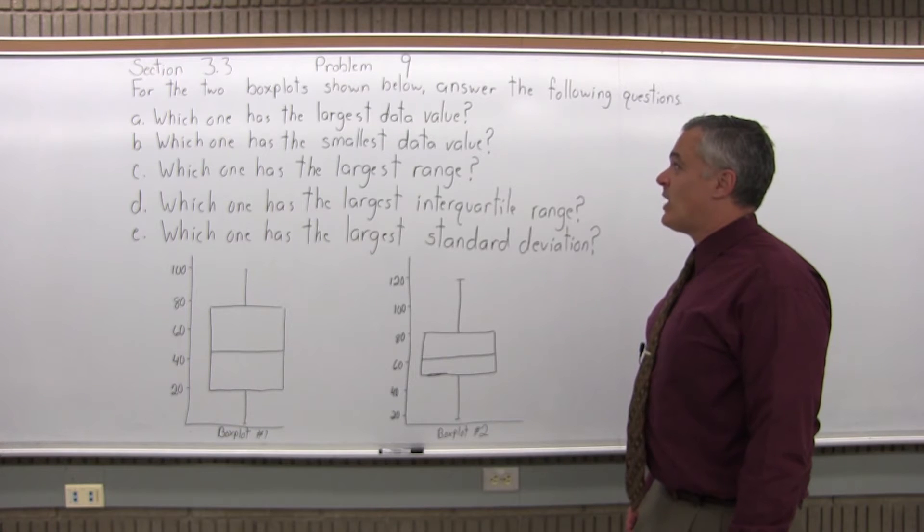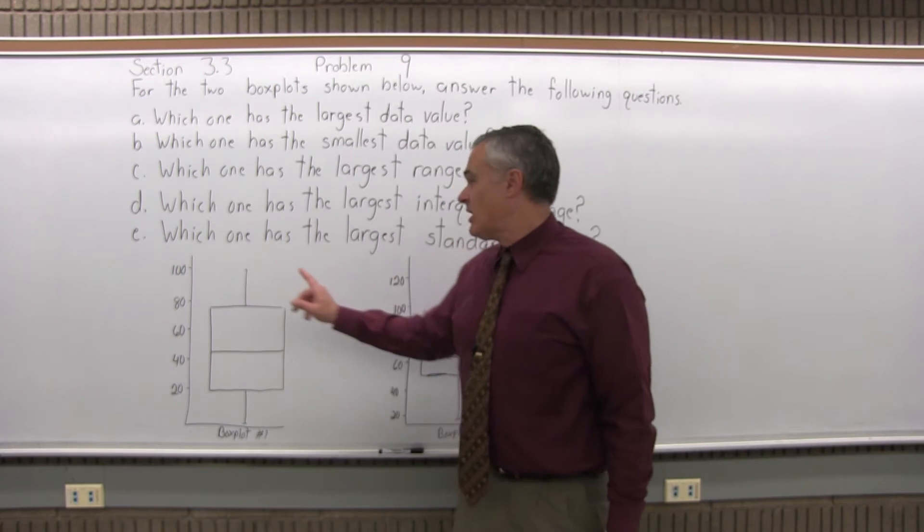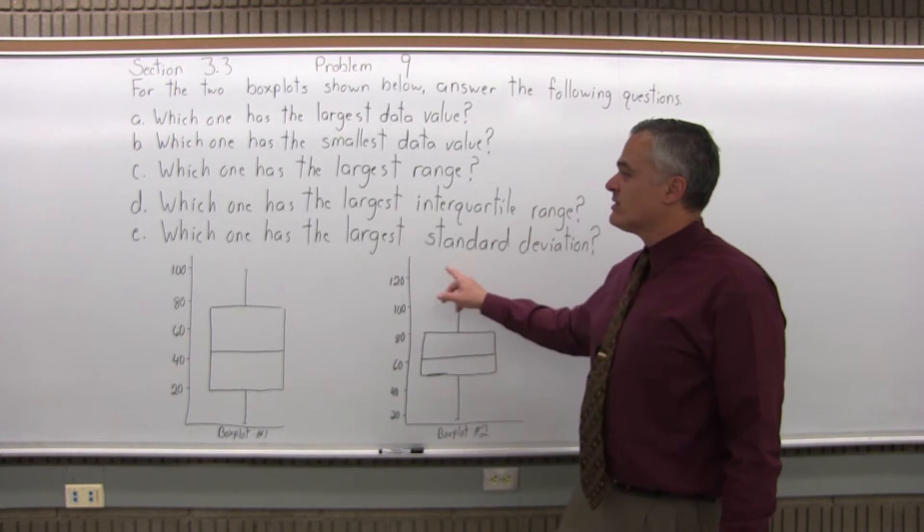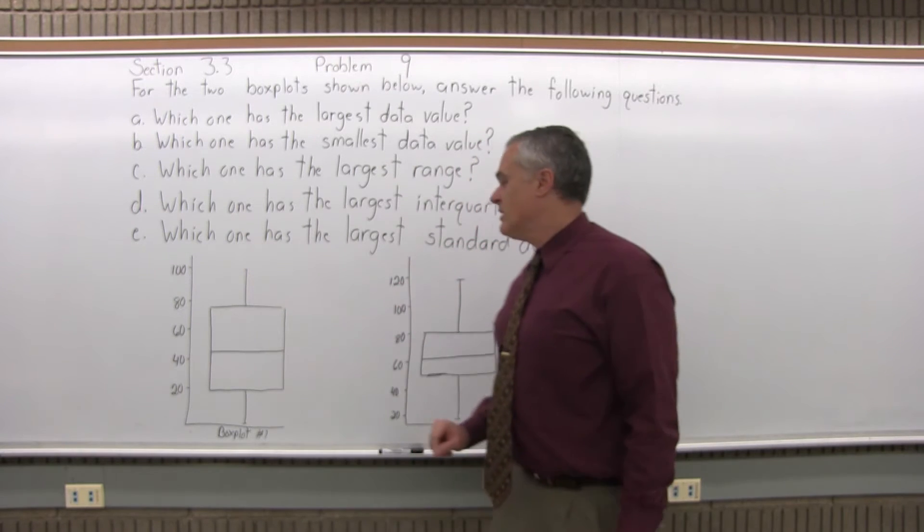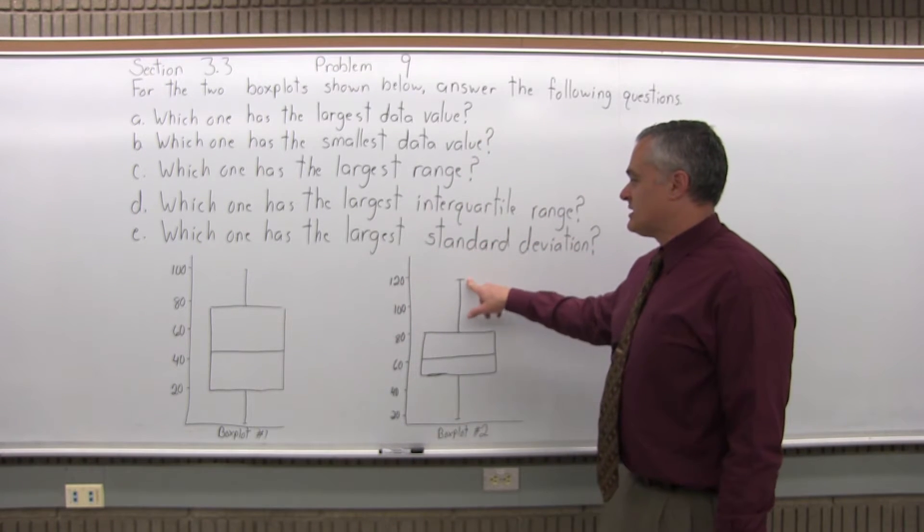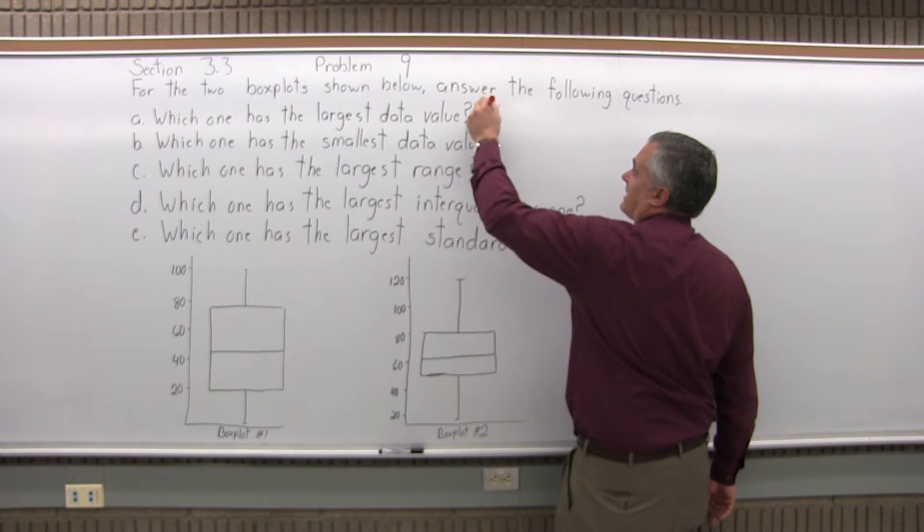A is, which one has the largest value? Well, the line coming out of the top of the box plot goes to the larger value, and according to the number scale, box plot number 1 has the largest value of 100, and box plot number 2 has the largest value of about 120, so box plot number 2 has the largest data value.